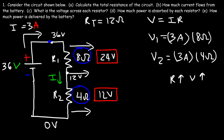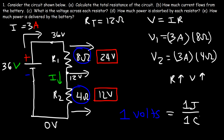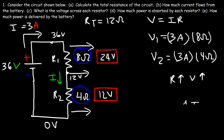The battery acts like a pump. When the charges flow in that direction — that's conventional current — the battery does work on the charges and increases the electric potential of the charge from 0 to 36 volts. The battery increases the electric potential of the charges; the resistors decrease the energy of the charges. Electric potential, measured in volts, is really the energy per unit charge — one volt is one joule per coulomb, so voltage is an energy-per-charge ratio.